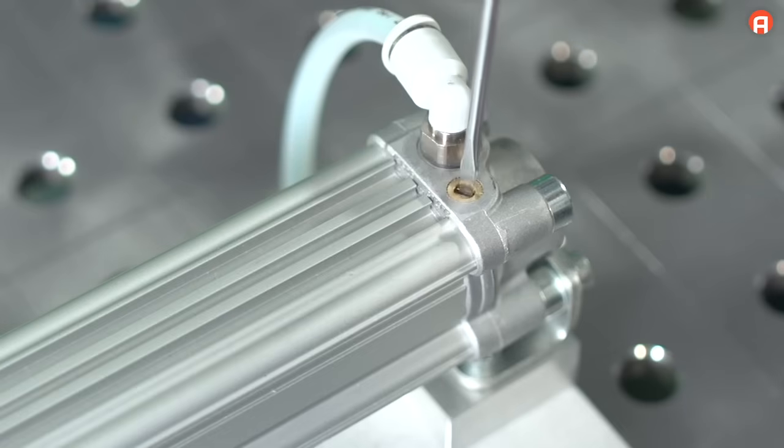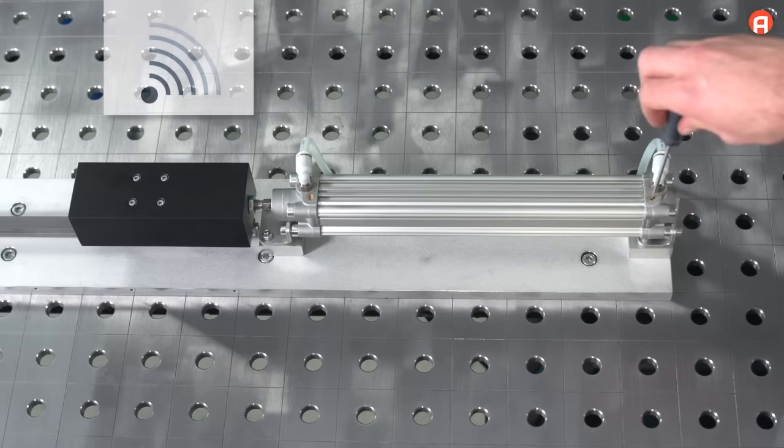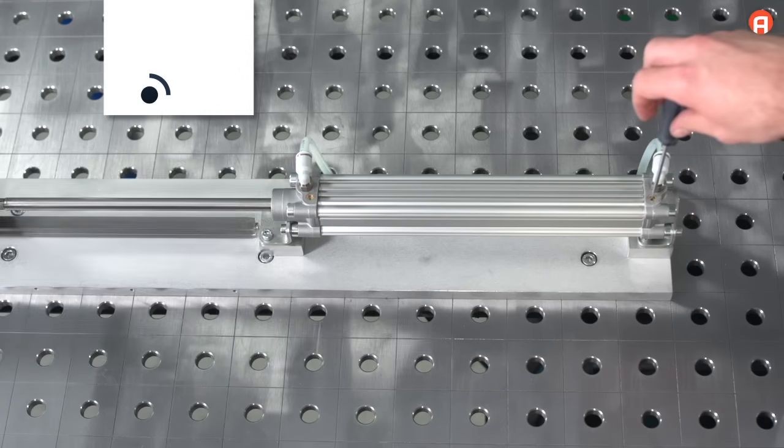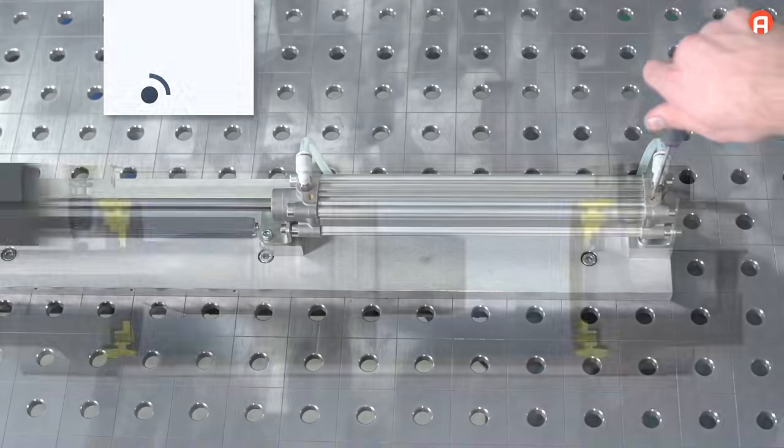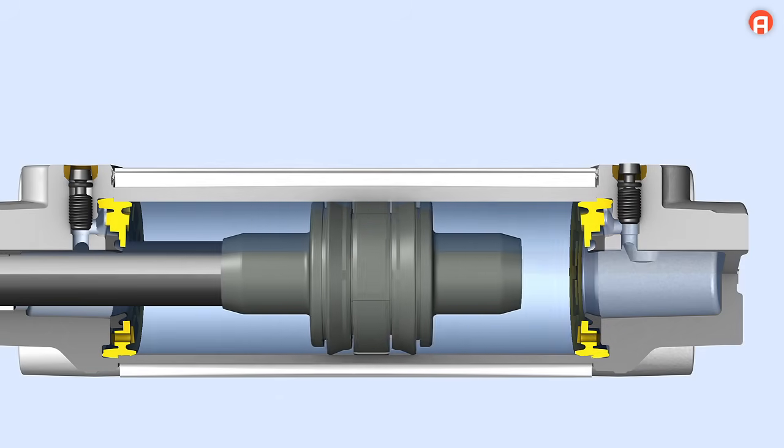Continue to slowly loosen the throttling screw. The cylinder will now get quieter until the noise is barely perceptible. The piston will gently move into the end position.